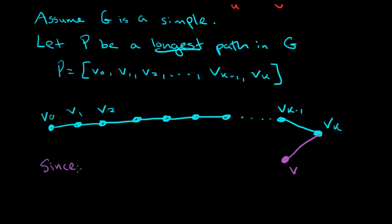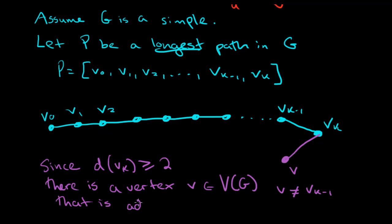So since the degree of Vk, in fact, all the vertices have degree at least 2, but since this has degree at least 2, there is a vertex V which is in the graph, so that V is not the other neighbor, not Vk minus 1, some new vertex V that is adjacent to vertex Vk.